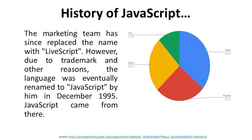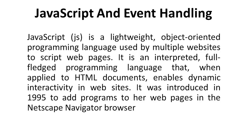That is how JavaScript came about. Now, JavaScript and event handling: JavaScript (JS) is a lightweight, object-oriented programming language used by multiple websites to script web pages. It is an interpreted, full-fledged programming language that, when applied to HTML documents, enables dynamic interactivity in websites.